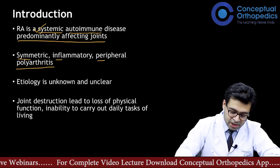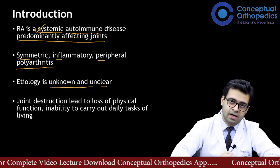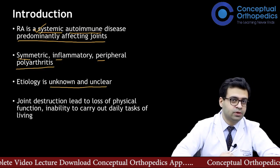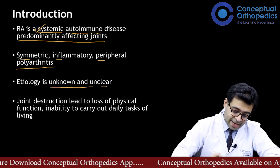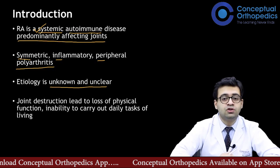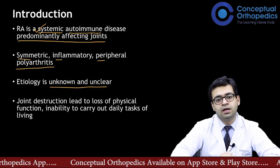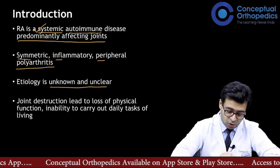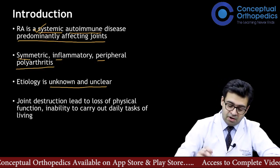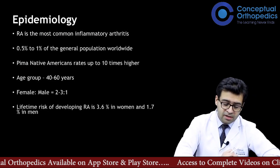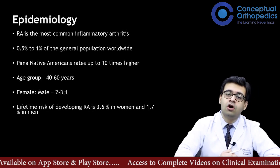Etiology is unknown and unclear, but there are a lot of hypotheses about why rheumatoid arthritis occurs, with evidence supporting each hypothesis. Importantly, joint destruction leads to loss of physical function and inability to carry out tasks of daily living, so it is very important to diagnose rheumatoid arthritis early and treat aggressively.